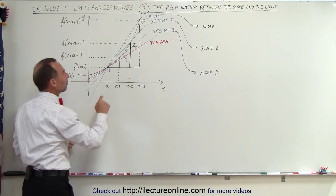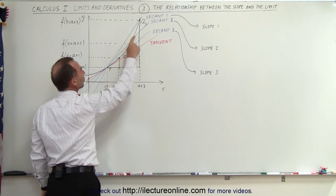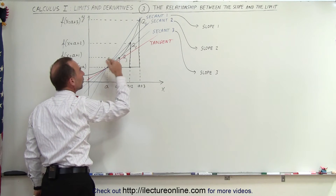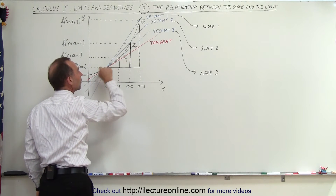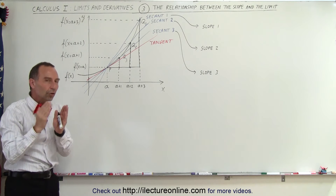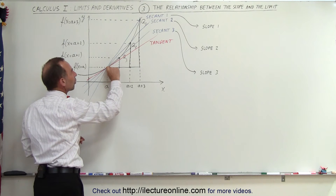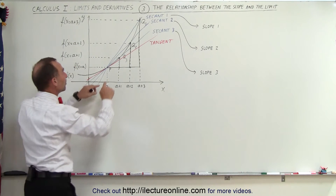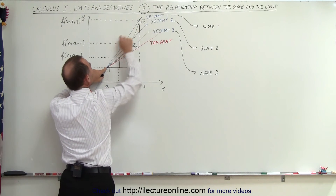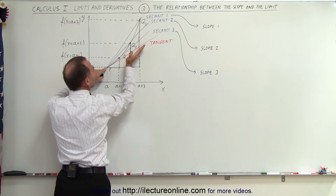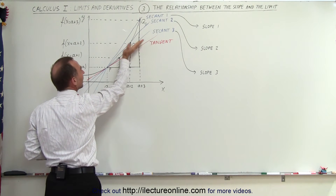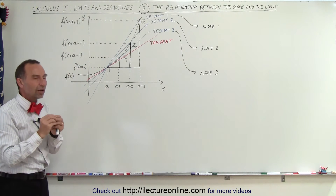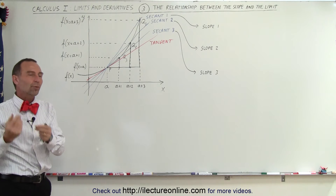Notice that the farther the points are apart from one another — for example, between Q1 and P is much farther than between Q2 and P, which is farther than between Q3 and P — the closer the points are to one another, the closer the slope of the secant line is to the slope of the tangent line. The farther the points are away, the greater the difference between the slope of the tangent line and the slope of the secant line. This is the whole concept of the limit as it relates to derivatives.